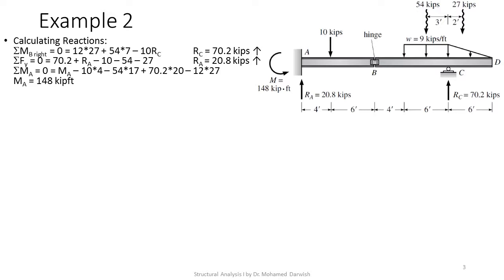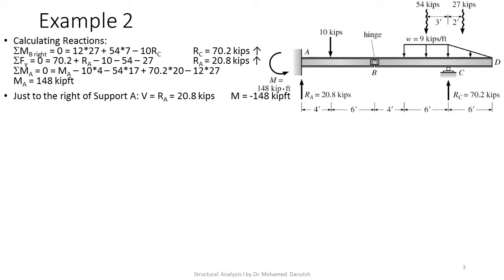The 27 was calculated as 9 times 6 over 2, and the 54 was 9 times 6. The resultant of the rectangular load acts at 3 feet from C, which is half the distance. The resultant of the triangular load acts at one third the distance from the base — so one third of 6 feet equals 2 feet. Taking a section just right of support A gives V equal to RA equals 20.8 kips.